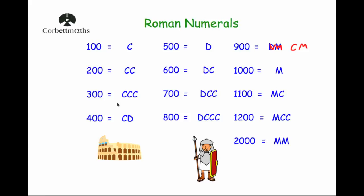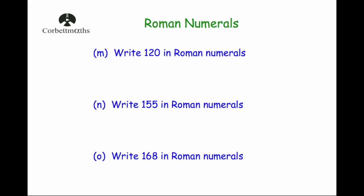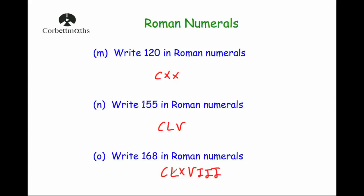Let's look at some examples using these. Write one hundred and twenty in Roman numerals — one hundred is C and twenty is XX, so CXX. Write one hundred and fifty-five — C for the hundred, L for fifty, and V for five, so CLV. Write one hundred and sixty-eight — C for the hundred, LX for sixty, and VIII for eight, so CLXVIII.